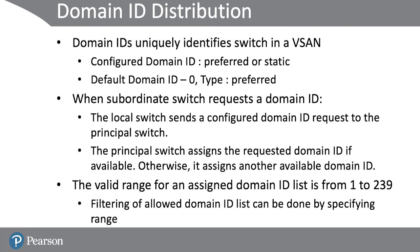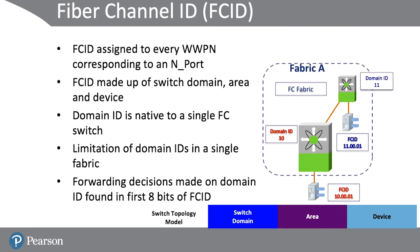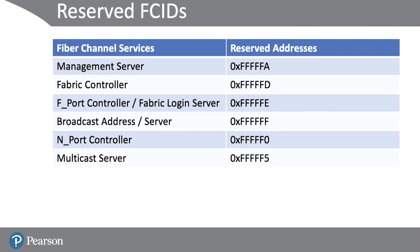The FCID is assigned to every worldwide port name corresponding to an endpoint. The FCID is made up of the switch domain ID, area, and the device ID. The domain ID is native to a single Fiber Channel switch. Forwarding decisions are made on the domain ID found in the first eight bits of the FCID. There are reserved FCIDs for the management server, fabric controller, F-port or fabric login server, broadcast address, port controller, and multicast servers — a list of reserved FCIDs that come into play based on your topology and design.